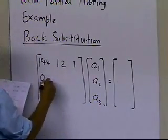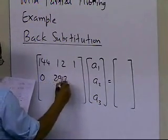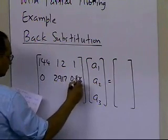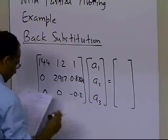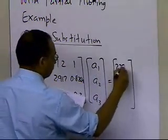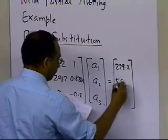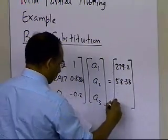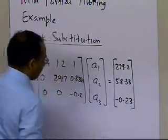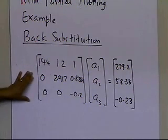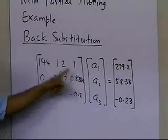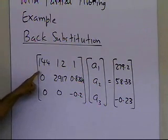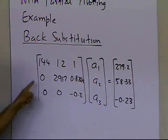This is an upper triangular matrix with the right-hand side values 279.2, 58.33, and -0.23. This is what we obtained at the end of forward elimination steps, where the coefficient matrix is upper triangular with everything below the diagonal equal to zero.